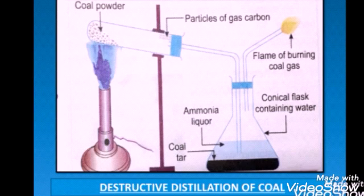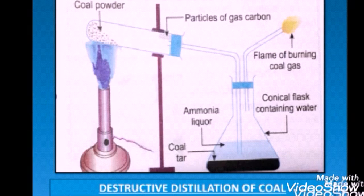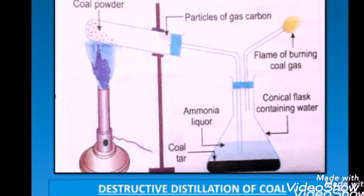The powdered coal will be heated strongly until it changes into coke, a grey porous residue. Dark brownish-black vapours are given out. Some carbon present in the vapours solidifies near the mouth of the hard glass dust tube and is called gas carbon.